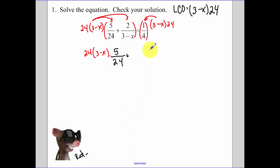We have in here a 2 over 3 minus x, I'm going to multiply by this least common denominator. And then on the other side, multiplying by our least common denominator. Now we're going to cancel.